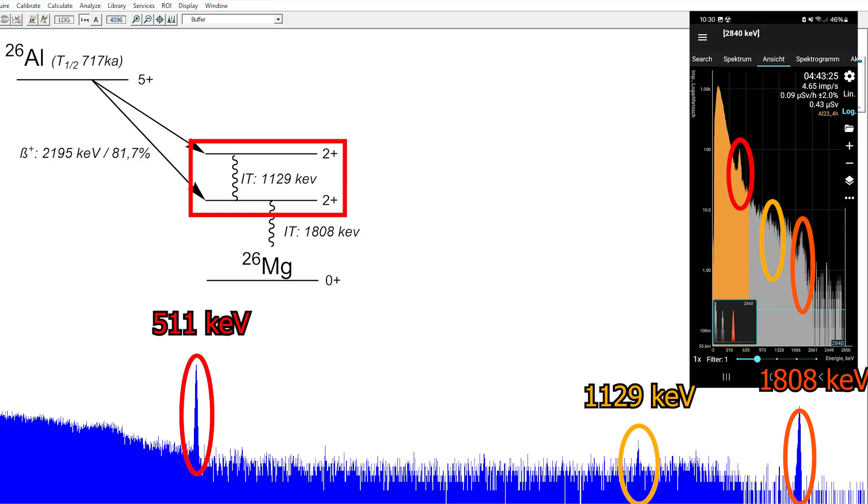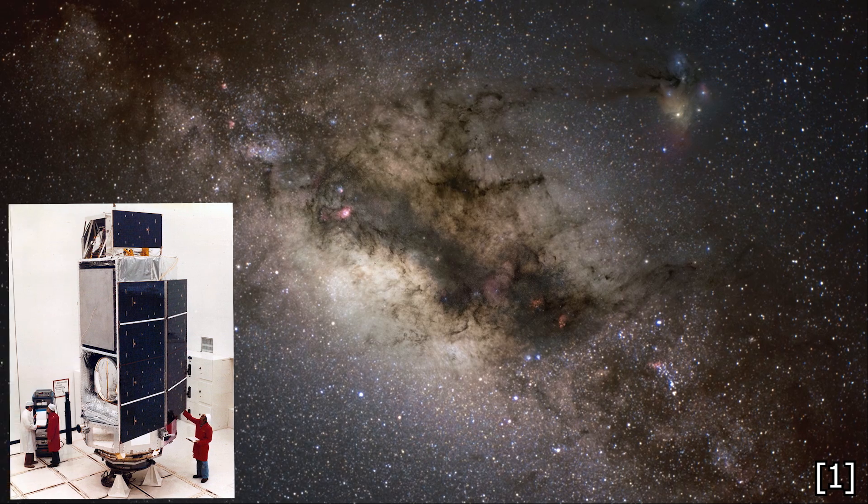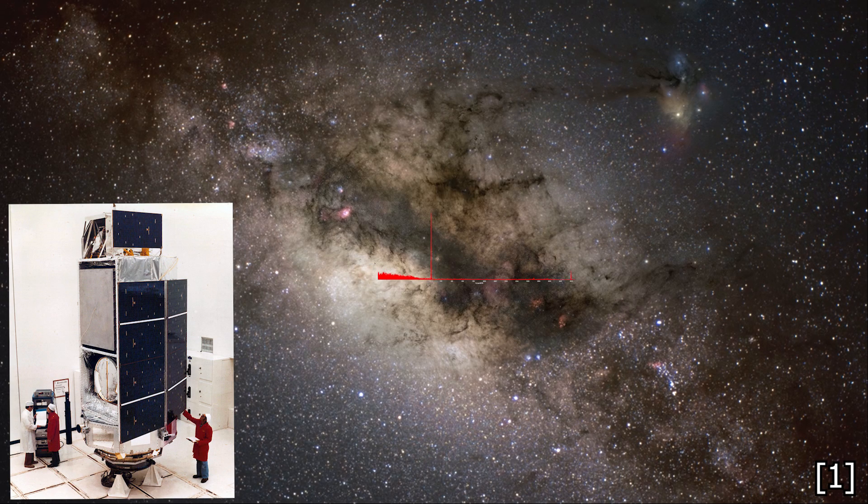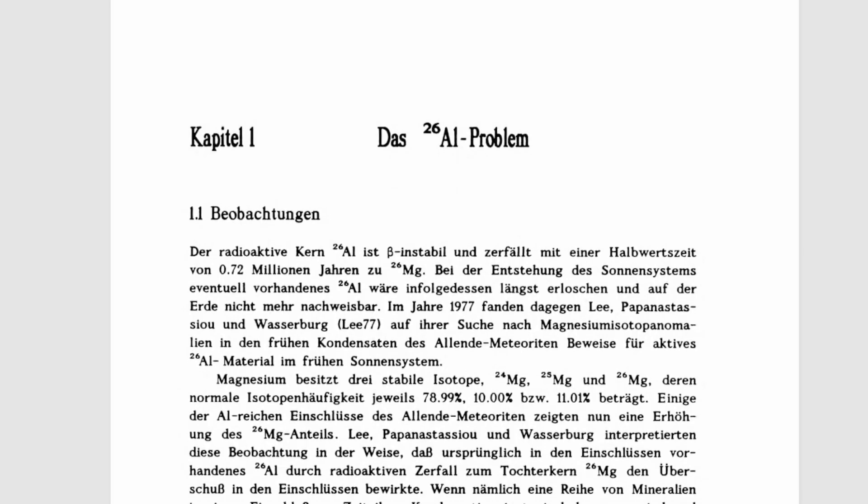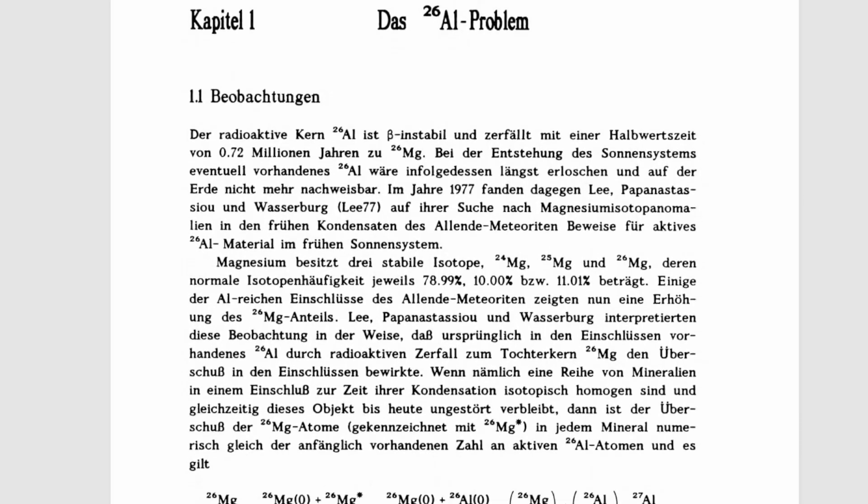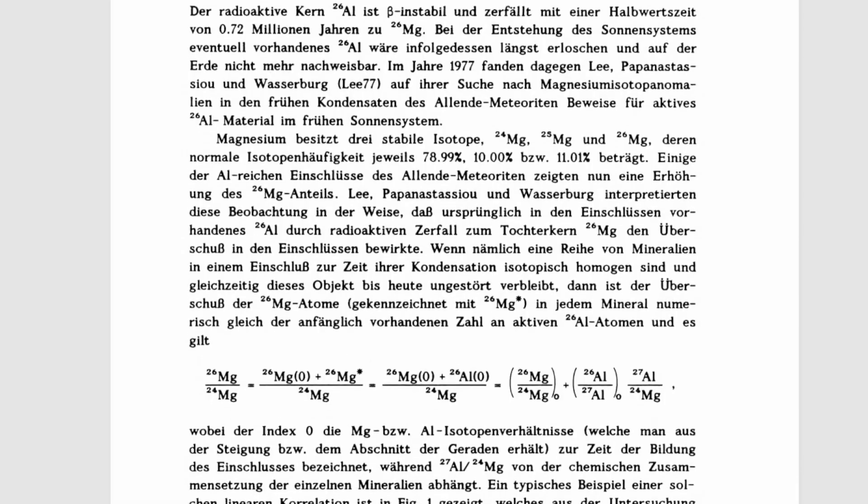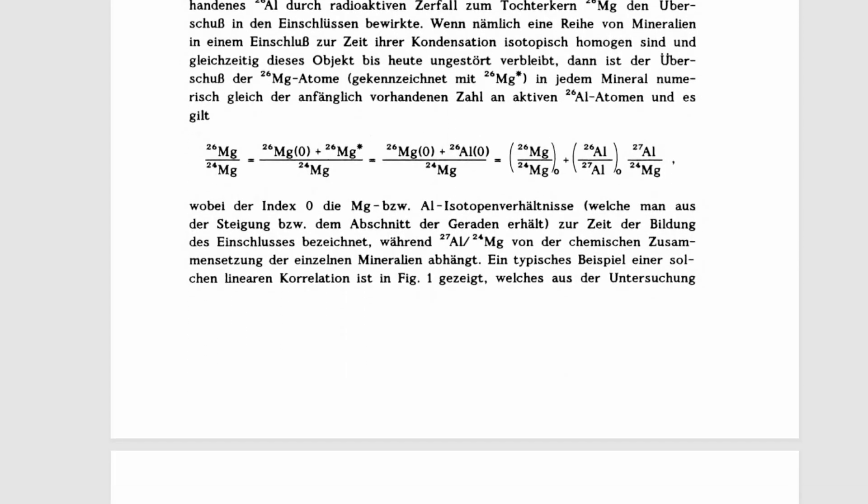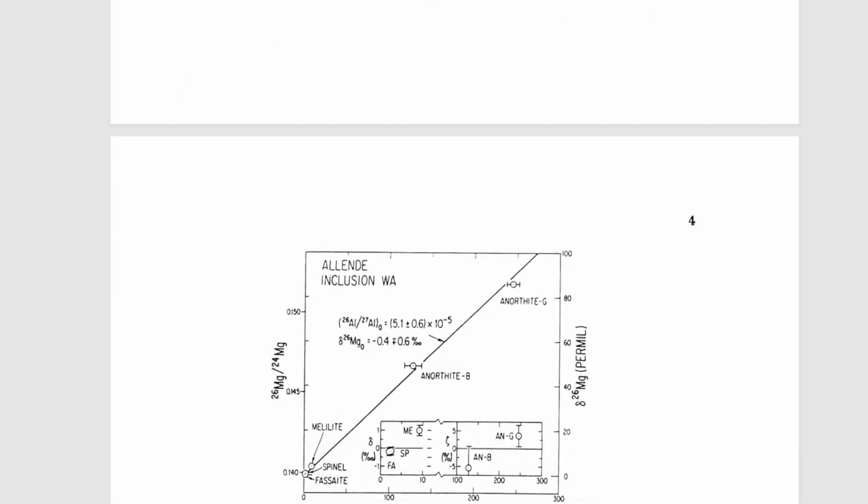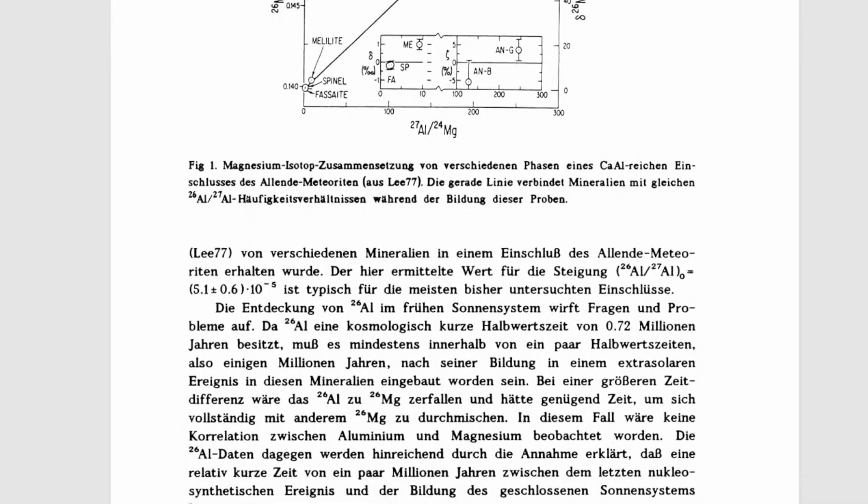The gamma lines just mentioned were also the first signs of radioactivity that could be measured from interstellar space. The interesting thing here is that by the time the gamma satellite, HEAO-3, was able to measure these gamma lines, scientists had already noticed that they were finding an unusually high amount of aluminium-26 in meteorites.